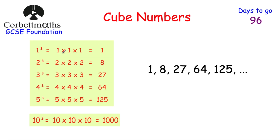Now let's look at cube numbers. Cube numbers are found by multiplying a number by itself and by itself again. 1 cubed is 1×1×1 = 1. 2 cubed is 2×2×2 = 8. 3 cubed is 3×3×3 = 27. 4 cubed is 64 and 5 cubed is 125. I recommend learning those off by heart. Also remember that 10×10×10 = 1000, so 1000 is also a cube number.